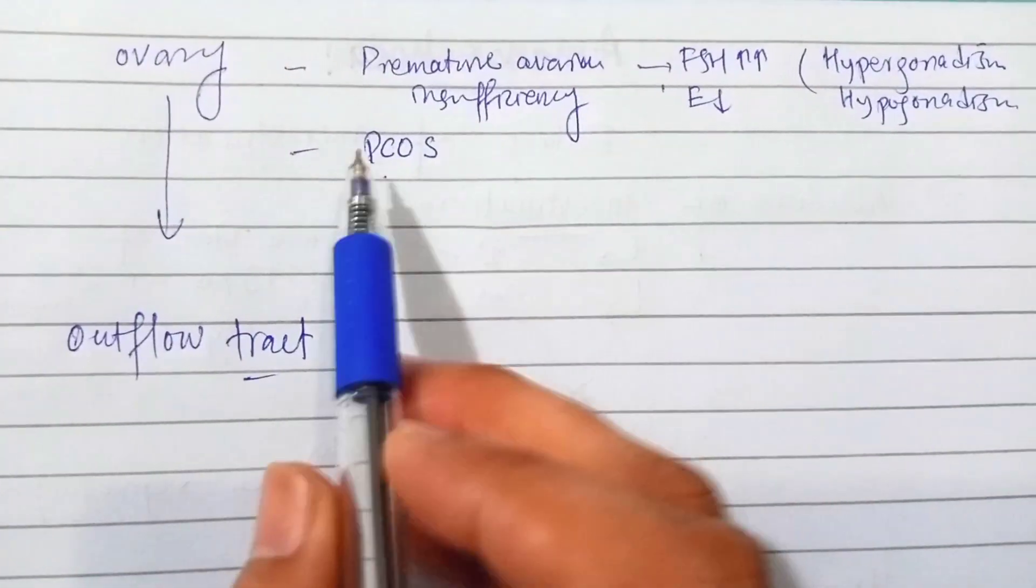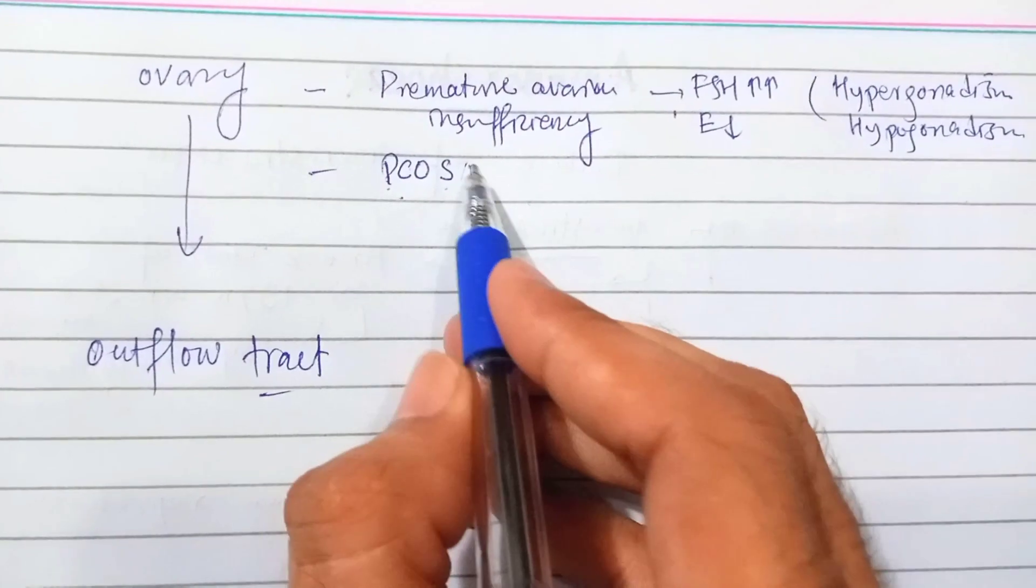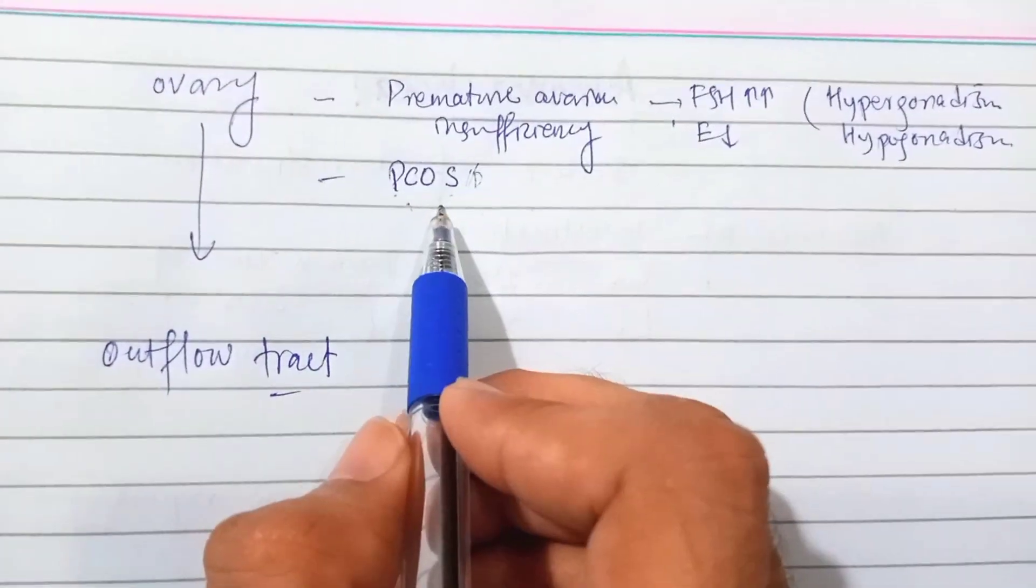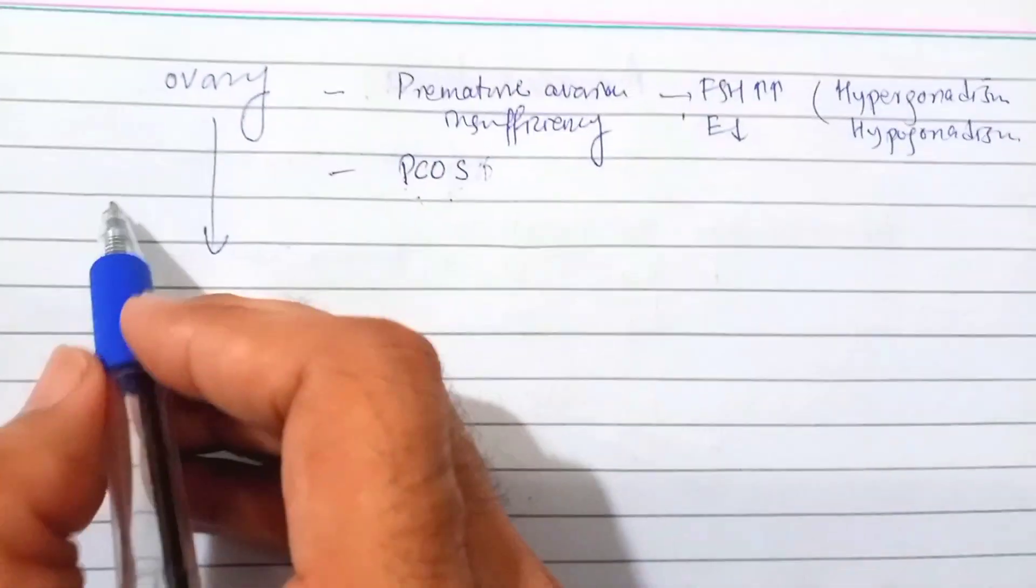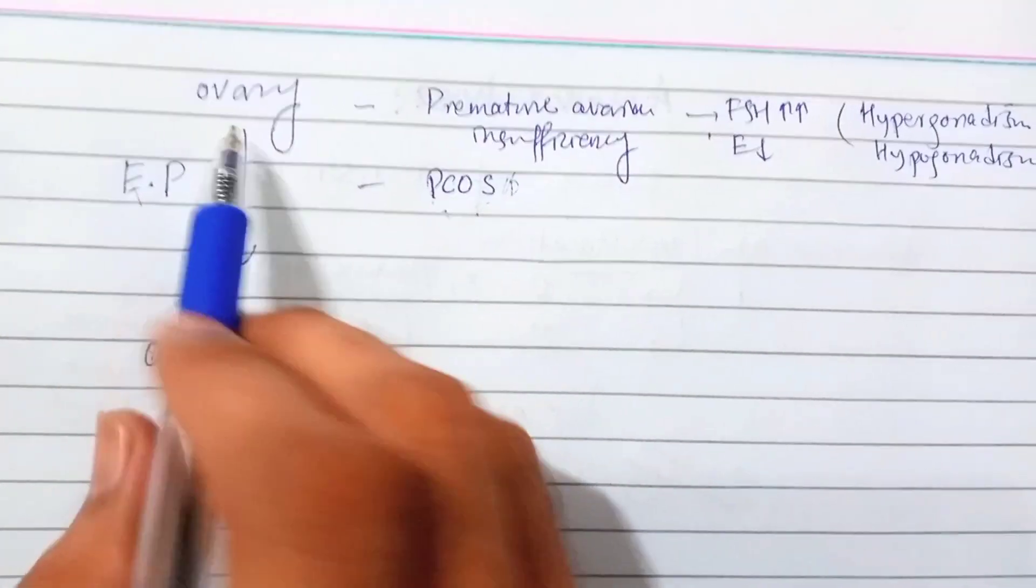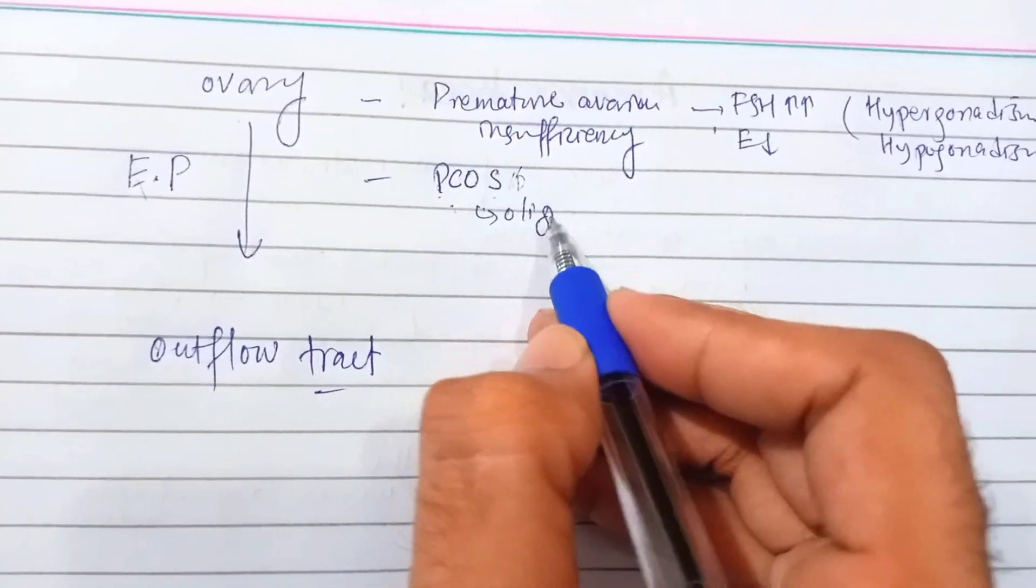So I will discuss polycystic ovarian syndrome, or polycystic ovarian disease. If there is polycystic ovarian disease, there is an effect on the ovary. In this case, we have disease of the ovary.